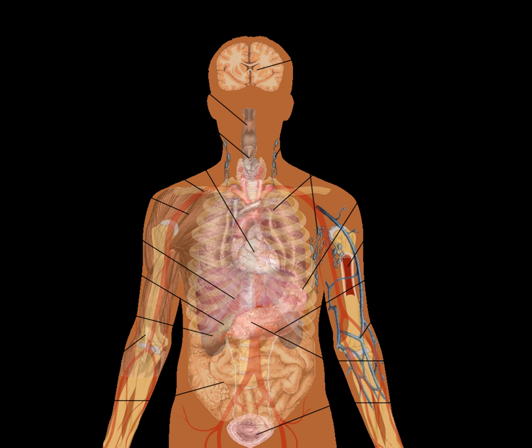Lymphatic system: structures involved in the transfer of lymph between tissues and the bloodstream, the lymph and the nodes and vessels that transport it, including the immune system, defending against disease-causing agents with leukocytes, tonsils, adenoids, thymus and spleen.